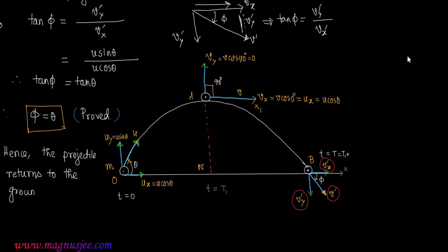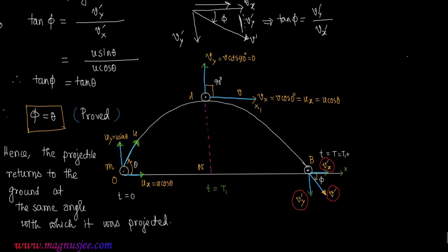Hence proved. The projectile returns to the ground at the same angle phi with which it was projected. At point O, the angle is theta, and at point B, the angle phi equals theta. Therefore, the projectile returns to the ground at the same angle with which it was projected.